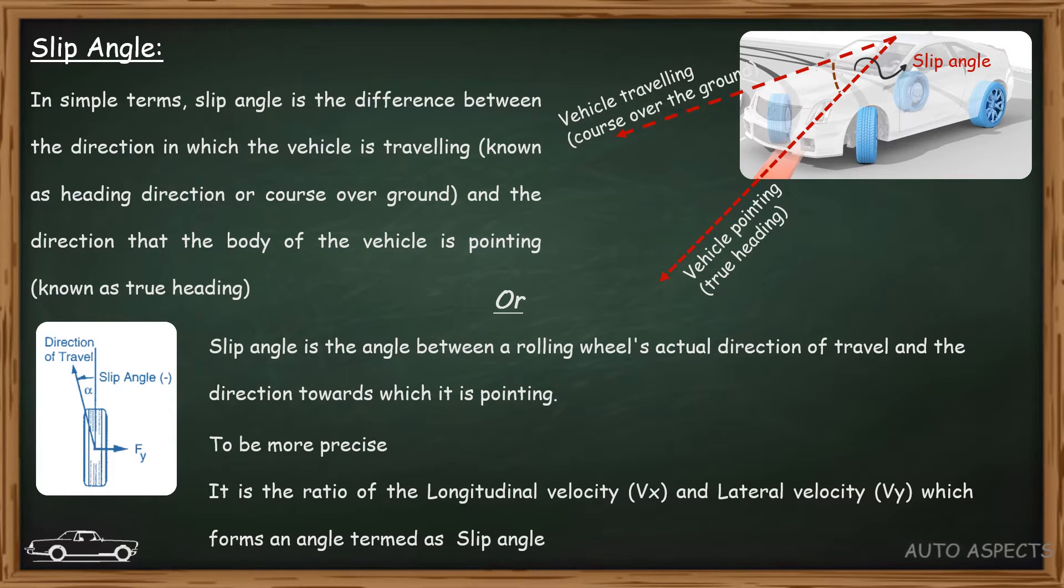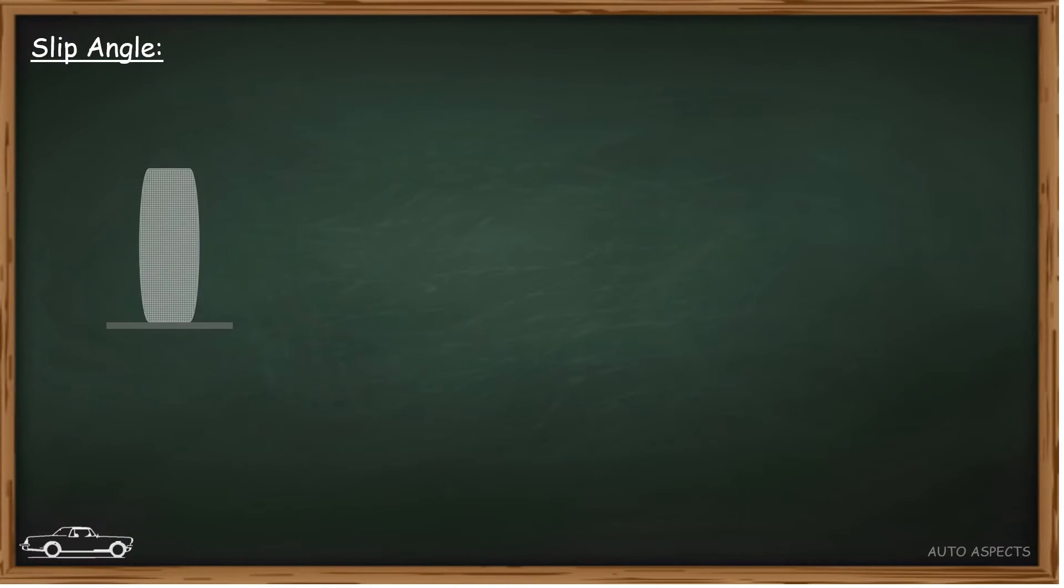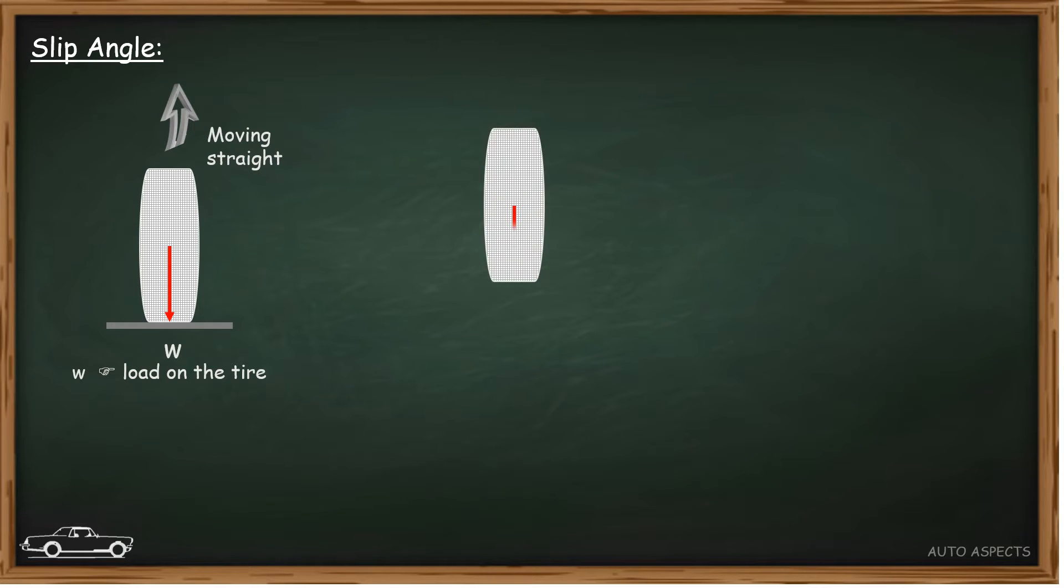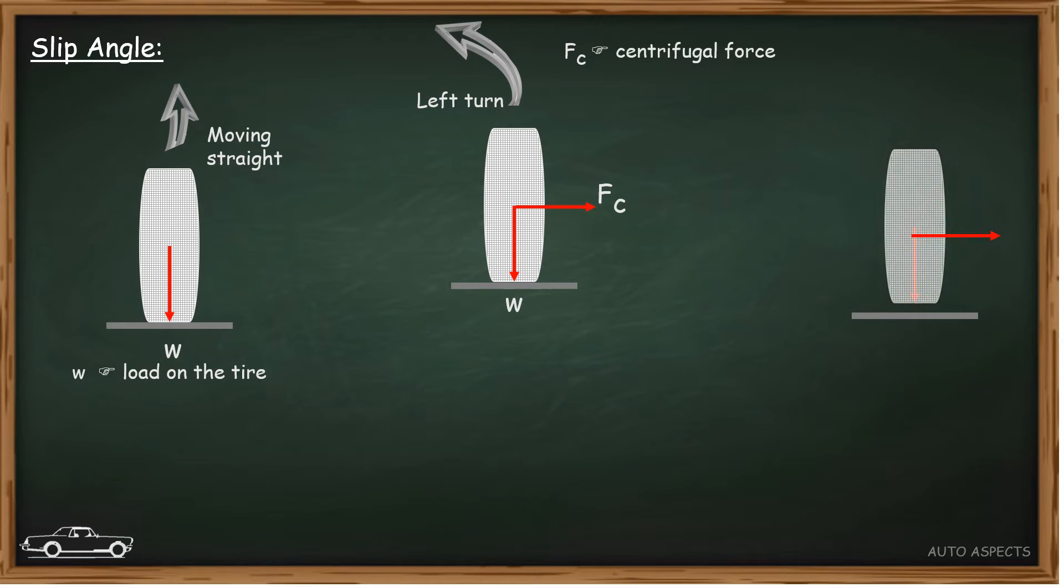Now let us understand in detail. Consider a tire which carries load w and heading in a straight path. When the tire takes a left turn, the centrifugal force fc acts on the right side of the wheel center. As the centrifugal force acts on the right side of the tire, this makes the tire to skid.